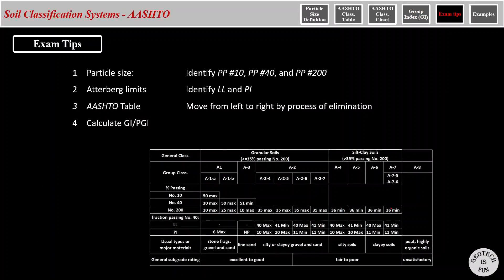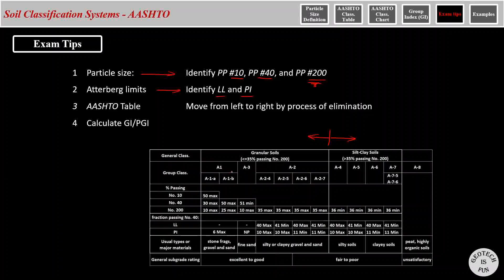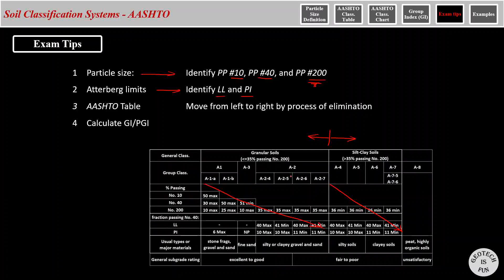And here are some simple tips to more efficiently use this table. The first one is identifying the particle sizes. What are the percentage passing sieve number 10, 40, and 200? And once we know the last one, we know which side of the table we should be looking at. Then we need to know what is the liquid limit and what is the plasticity index. Once we know these two, and we know which side of the table we should be looking at, we need to start moving from the top left to the bottom right of each side, and use the process of elimination to find the classification of the sample that we have. And lastly, we need to calculate the GI, or PGI.